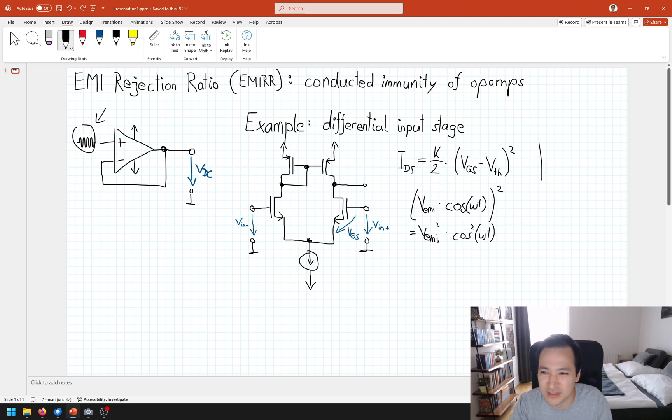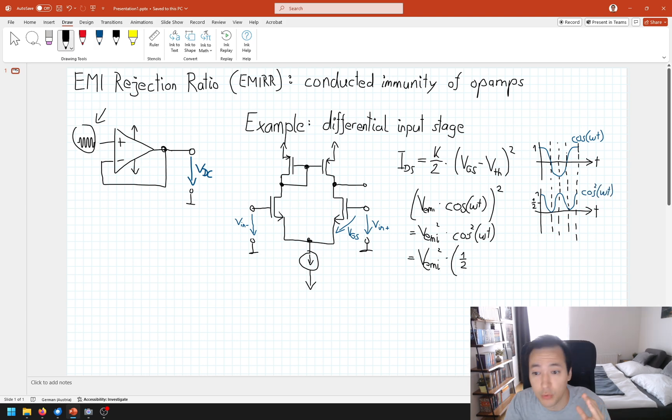Now, what is cosine squared? Cosine looks like this, and now cosine squared looks something like this. Or in other words, cosine squared is equal to one half plus cosine two omega t half. And here we have it. First, we have cosine with two times the frequency, which means it's a second harmonic, but this is a different topic. And here we have our DC component.